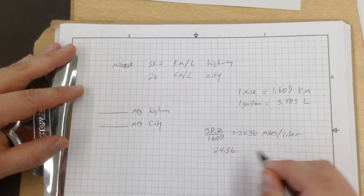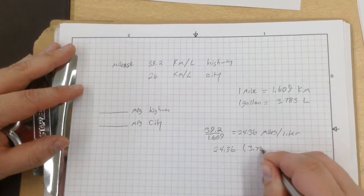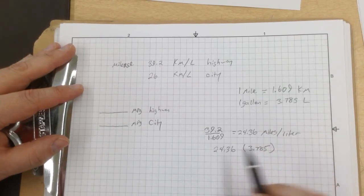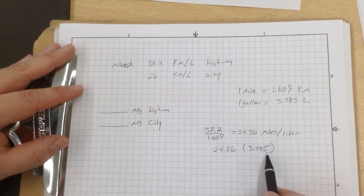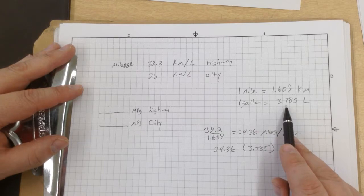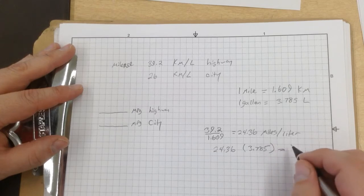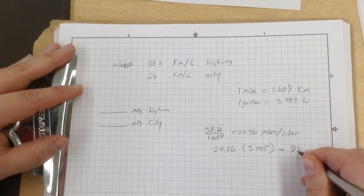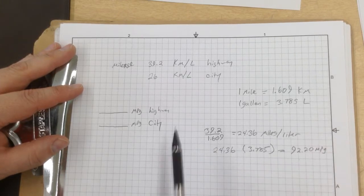What we do is take our 24.36 and multiply it times 3.785. 24.36 is how many miles per liter, 3.785 is gallons per liter. When we multiply these together, we are going to get 92.2 miles per gallon.